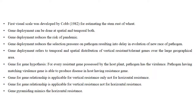The gene-for-gene hypothesis states that for every resistant gene possessed by the host plant, the pathogen has a corresponding virulence gene. A pathogen having a matching virulence gene is able to produce disease in a host having a resistant gene. Gene-for-gene relationship is applicable for vertical resistance only, not for horizontal resistance.